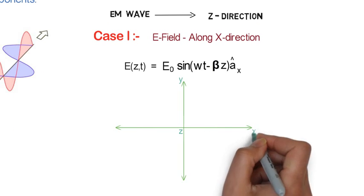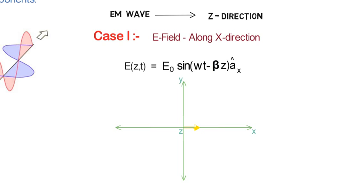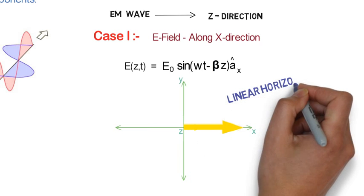If we plot this on rectangular axis, we will find that its magnitude is changing continuously. But the direction will always be in positive x direction. So this wave is said to have linear horizontal polarization.